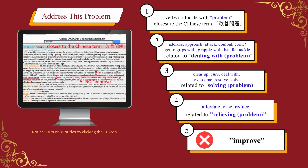To address this problem, find which verbs collocate with 'problem' and have meanings closest to the intended term. For example, verbs such as address, approach, attack, combat, come to grips with, grapple with, and tackle are related to dealing with a problem. While clear up, cure, deal with, overcome, resolve, and solve are related to solving a problem. Alleviate, ease, and reduce are related to relieving a problem. However, 'improve' cannot be used.